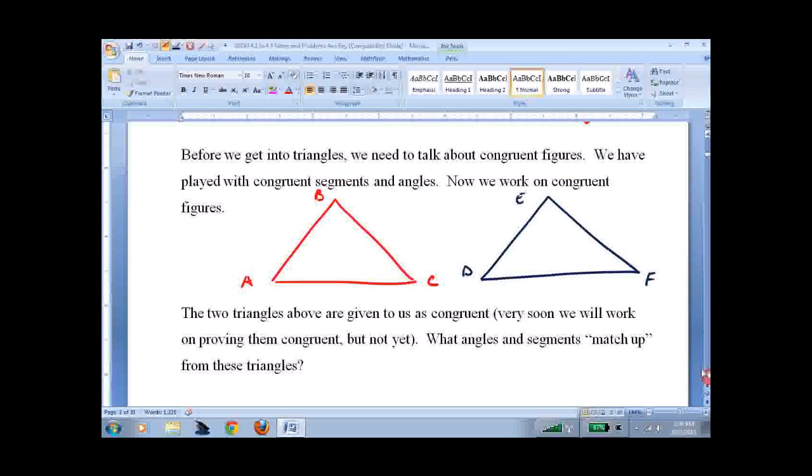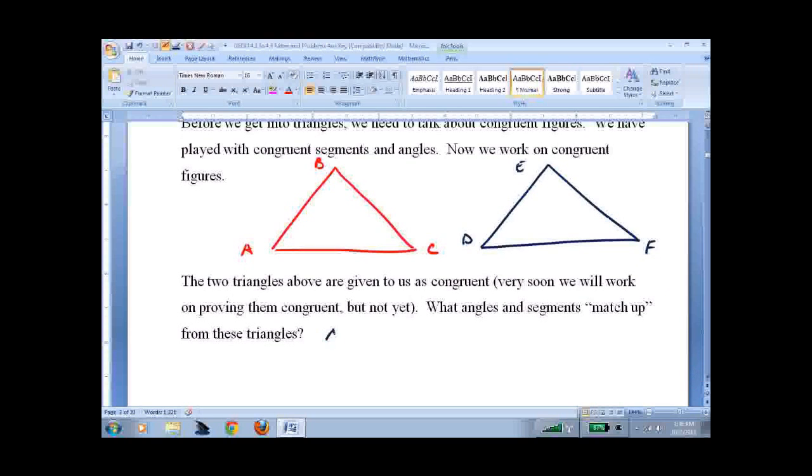And we're told triangle ABC is congruent to triangle DEF. You might be tempted to just slap any old letters up there. FED or EFD. Don't. Because this is very specific. First is first. These two come first. That means that angle A and angle D are congruent.